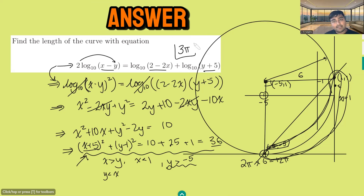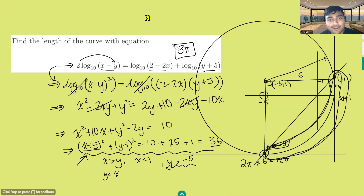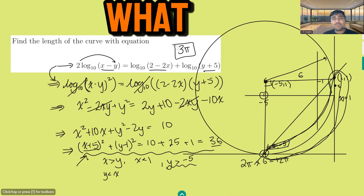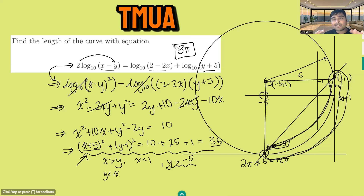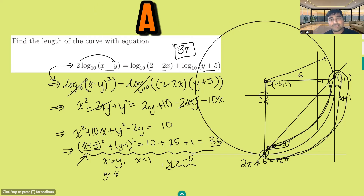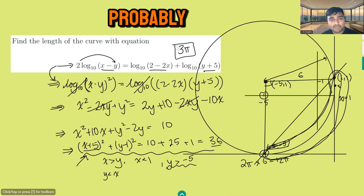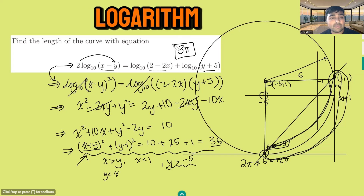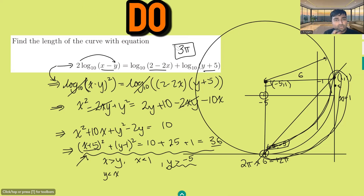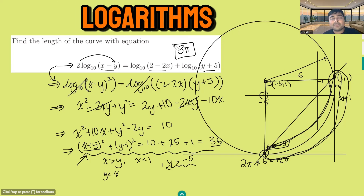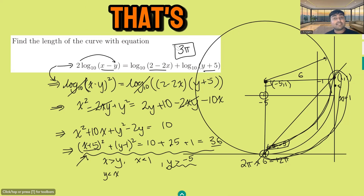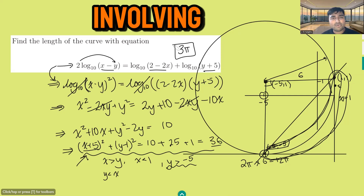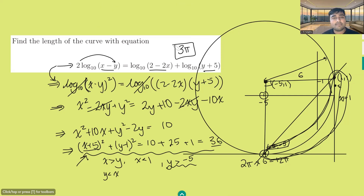That's the answer. What we should take from this problem is that you have to be very careful, especially with question 20 of the TMUA — there will always be a twist. If it seems too good to be true, it probably is, especially with logarithm problems. You always want to check your answer: if you plug it back in, are all the logarithm inputs positive? That is a prerequisite before doing any algebra with logarithms. Whenever you're dealing with an equation involving logarithms, just check that the inputs are positive.